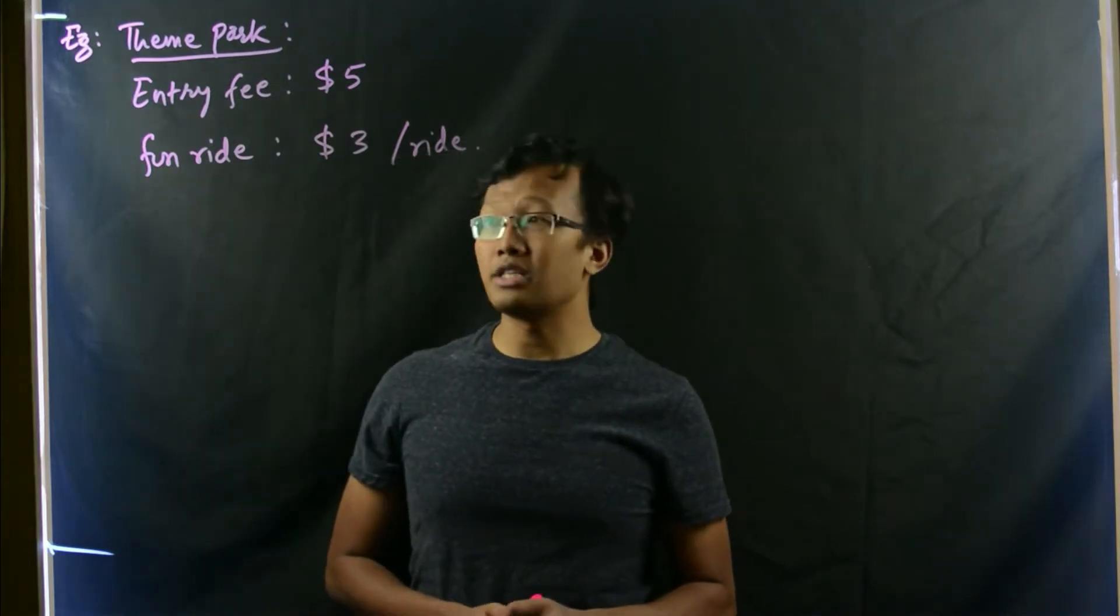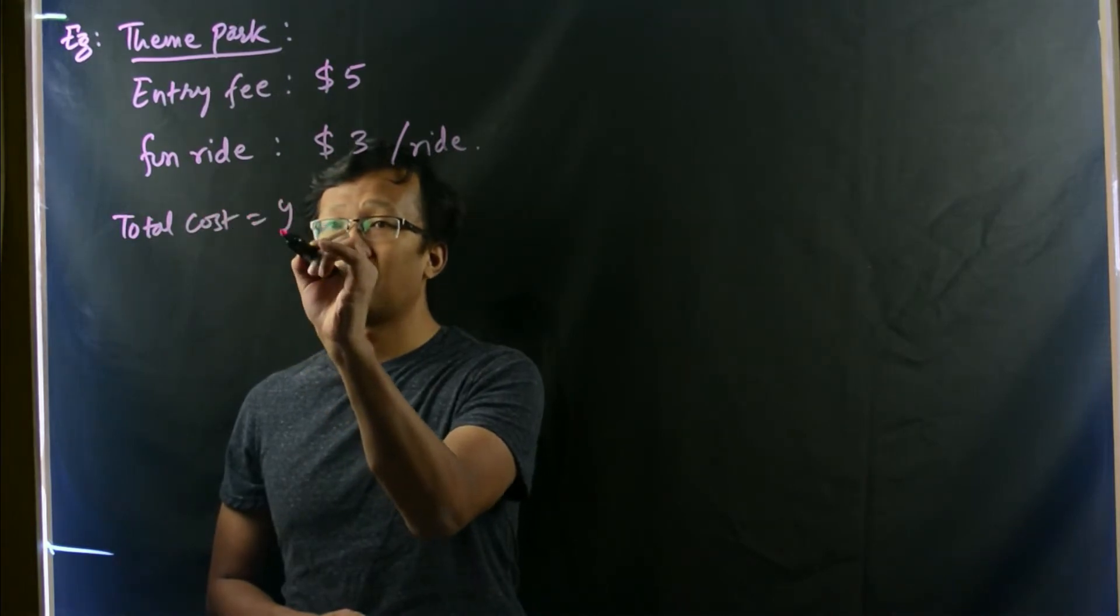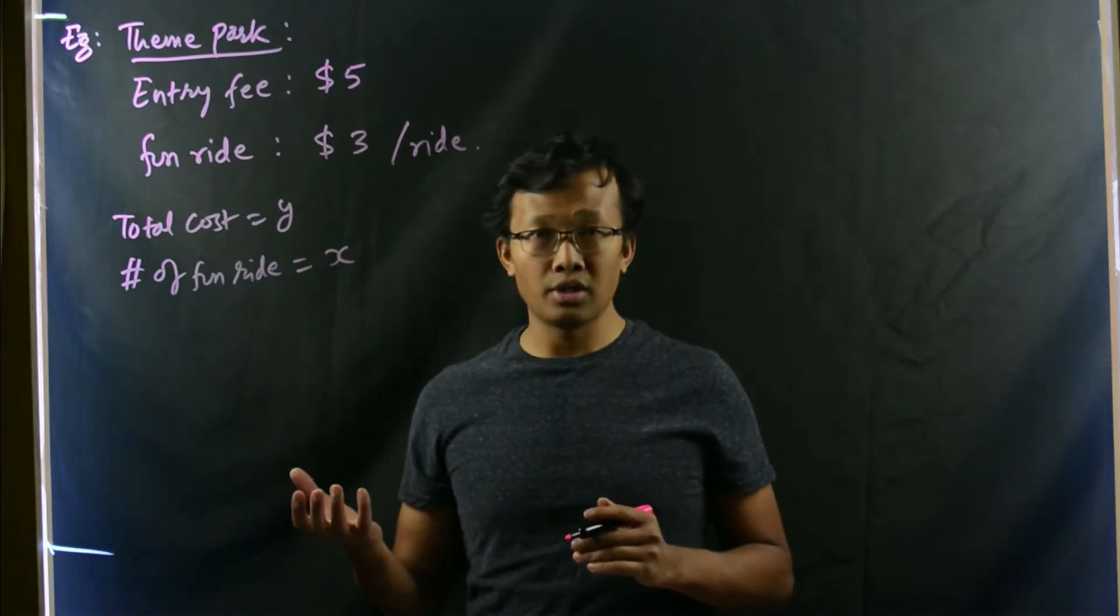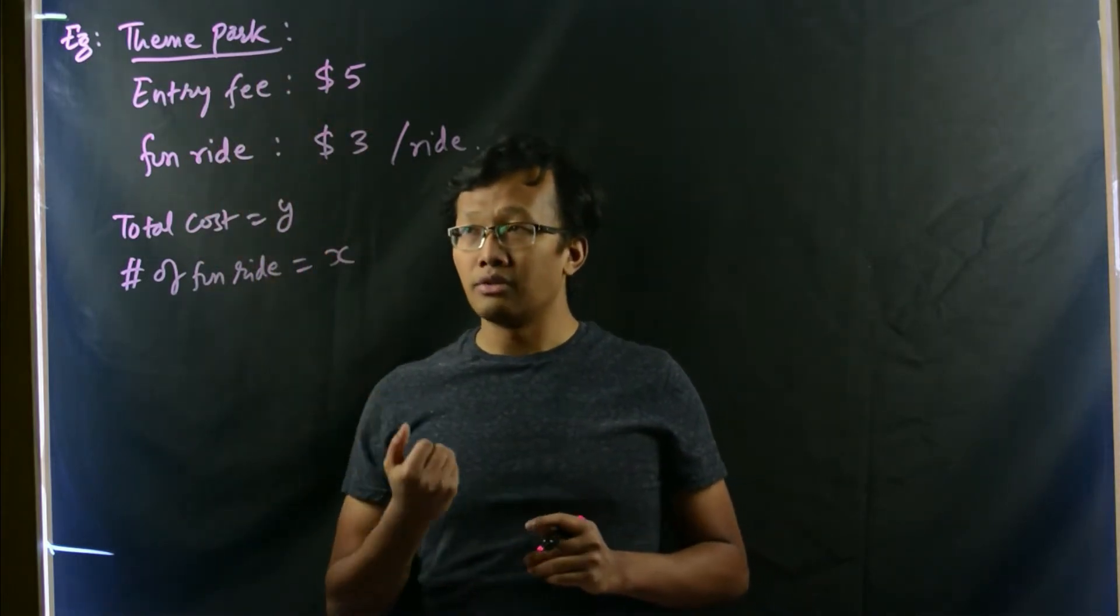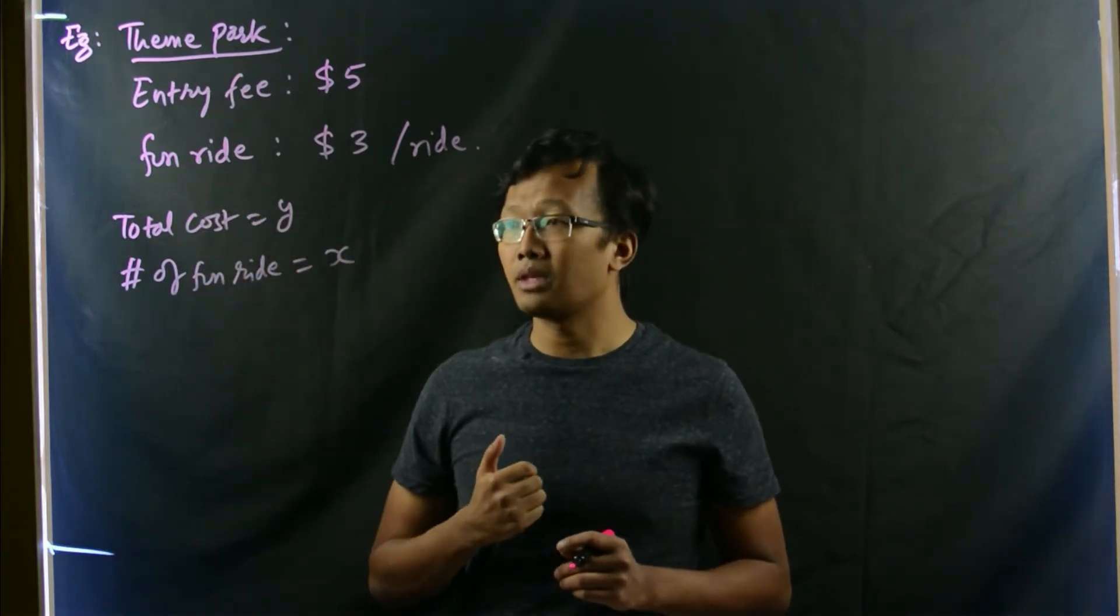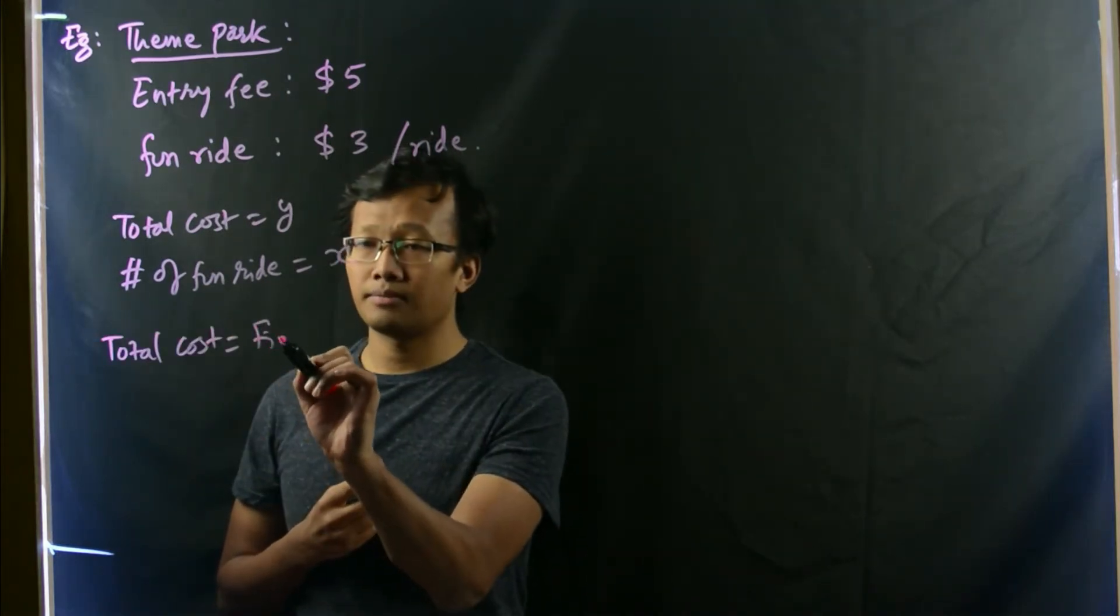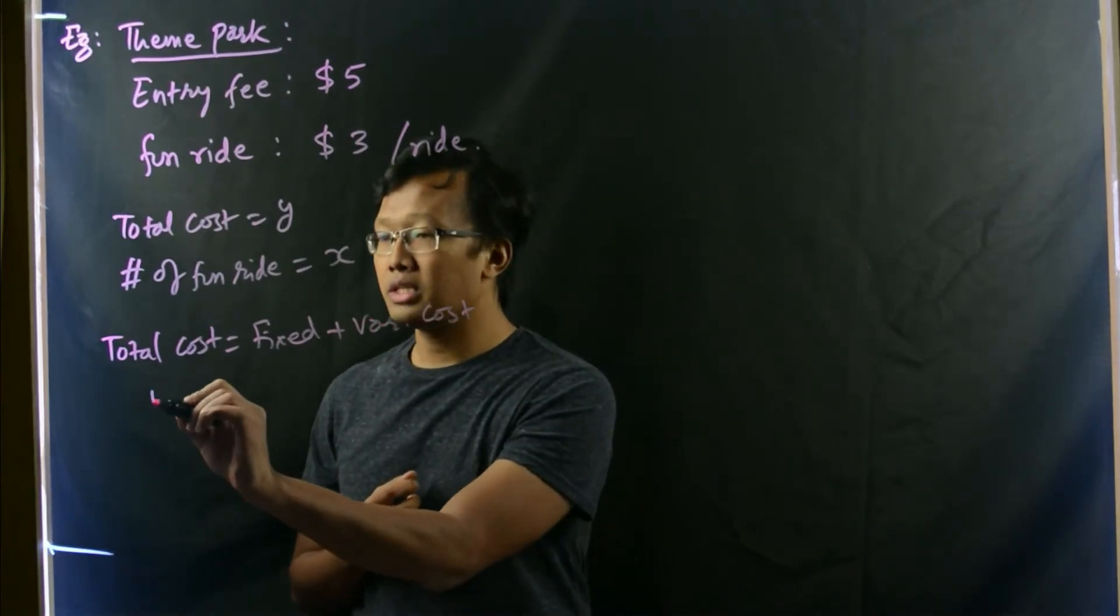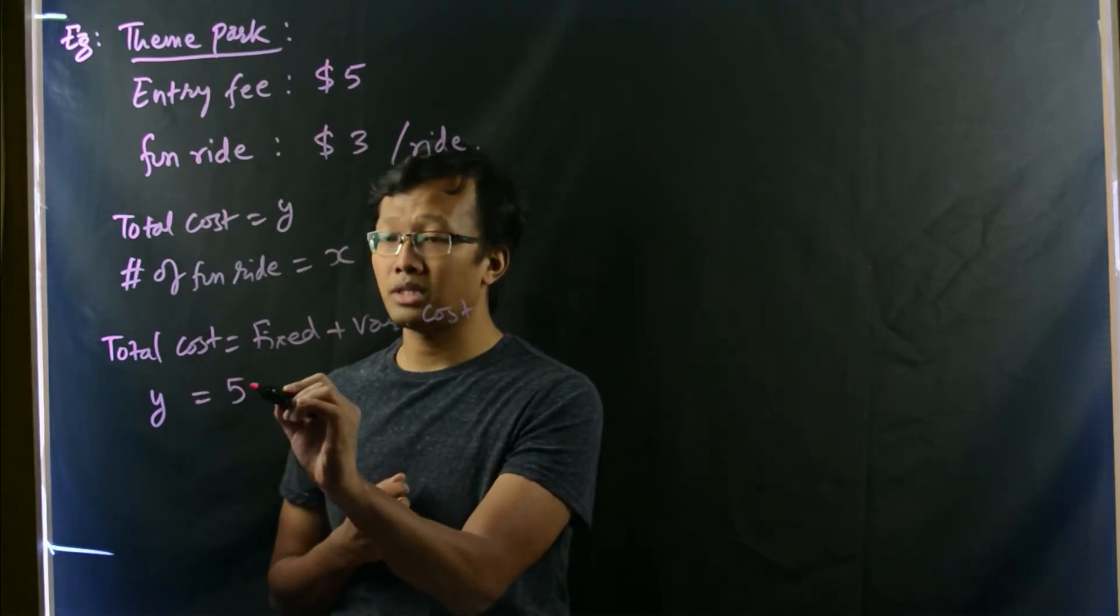The cost of fun ride is $3 per ride. Then, let us consider that the total cost is y. Total number of fun rides is x. Then, we can come up with an equation which models this situation. You can see that as we go for more fun rides, then our cost would be increased. Then the total cost would be simply fixed cost plus variable cost.